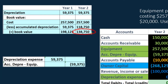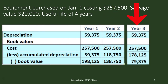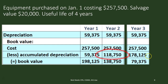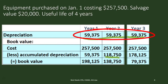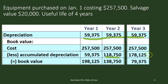In year three it looks much the same under the straight line method — same depreciation expense amount. The cost remains the same, and the accumulated depreciation is last year's $118,750 plus the current year's depreciation expense of $59,375, giving $178,125. You could also think of it as $59,375 times three years. Subtracting from the cost of $257,500 gives a book value of $79,375.